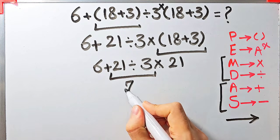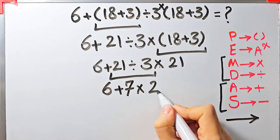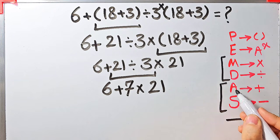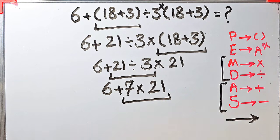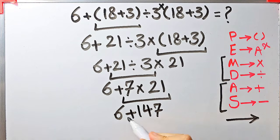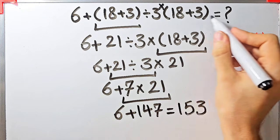21 divided by 3 equals 7. Now we have 6 plus 7 times 21. In this step we have addition and multiplication. We simplify the multiplication first because it has higher priority than addition: 7 times 21 equals 147. Now we have 6 plus 147, and the final answer of this question equals 153.